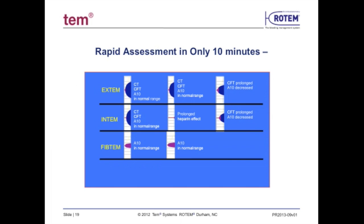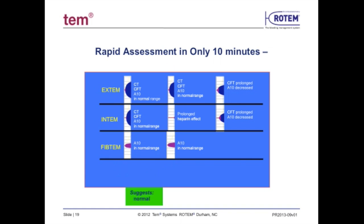One of the advantages of the Rotem system is the ability to make a differential diagnosis very quickly by understanding what a normal and abnormal tracing looks like. A determination can happen in about 10 minutes after starting the test. In the first example, a 10-minute assessment of Extem, Intem, and FibTem all demonstrate normal-looking clotting times and amplitude at A10. Therefore, the patient may not be bleeding due to a coagulopathy but due to a surgical bleeding issue, such as inadequate mechanical hemostasis.